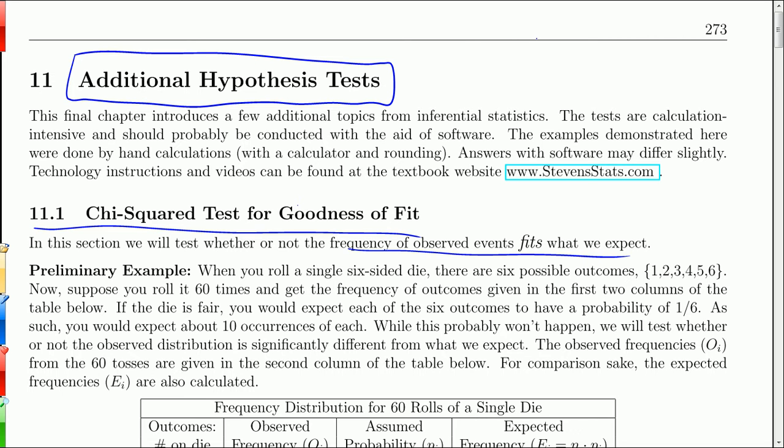And then we will do an ANOVA test, which is short for analysis of variance, where we test for the difference in means of more than two populations.